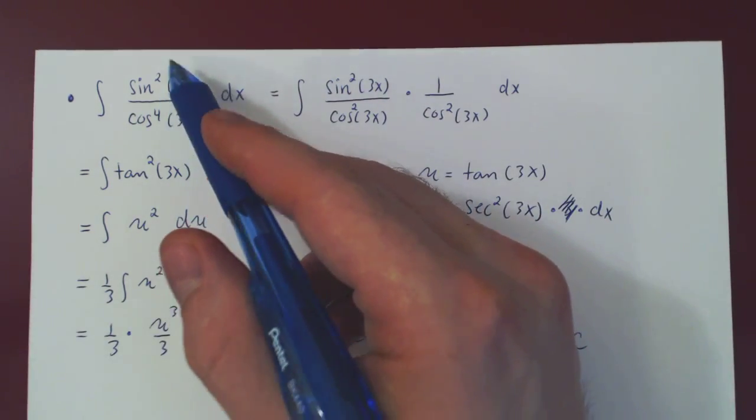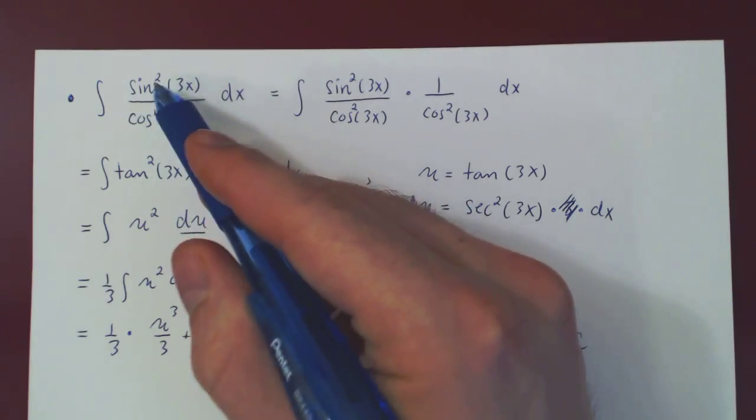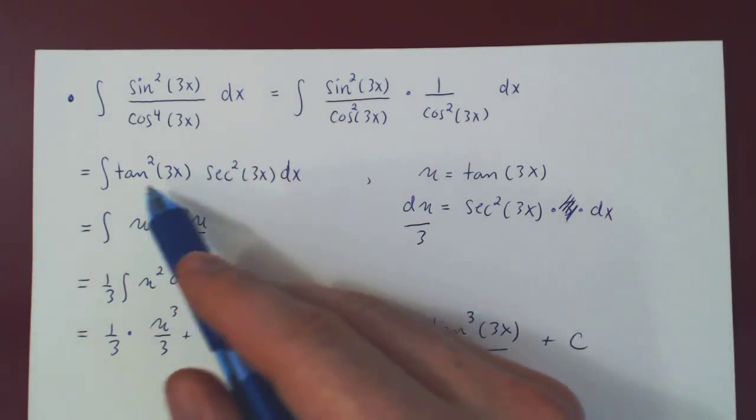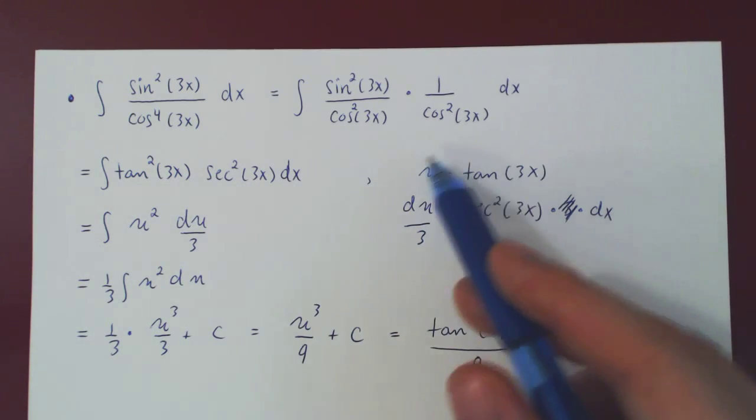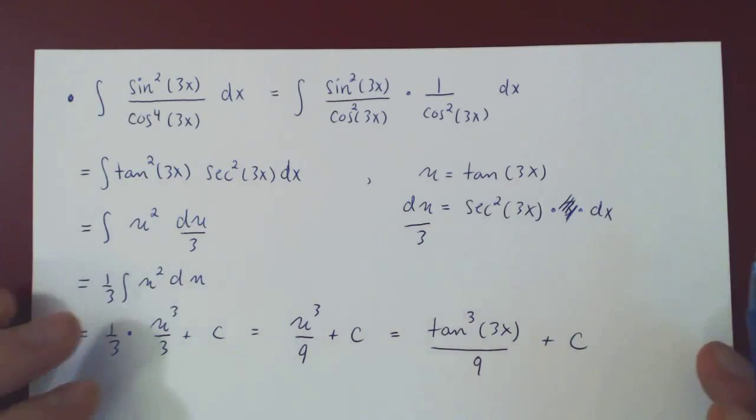So sometimes, when you're stuck with sines and cosines, and nothing else is going to work, try and convert your sines and cosines, if possible, into tangents and secants, and hopefully you can make a simple u substitution. Let's look at one other example.